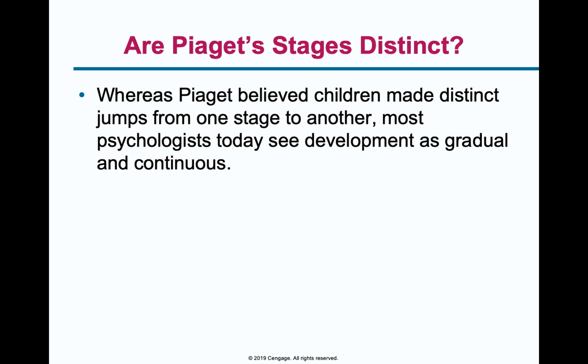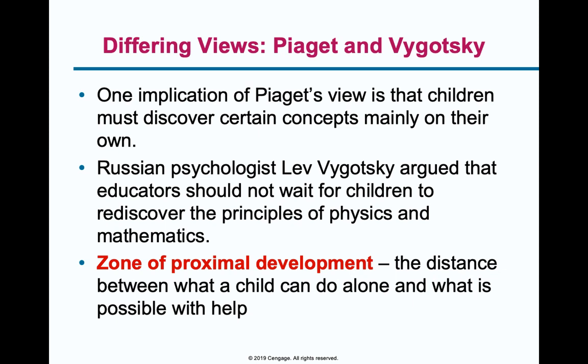Piaget's stages are not rigid. Not everyone is in the same place at the same time — everyone will generally fall somewhere along the bell curve, but it's more of a continuum of development across the lifespan where all these processes begin to solidify and you begin to develop more formal ways of thinking.